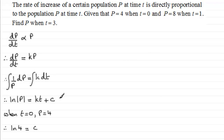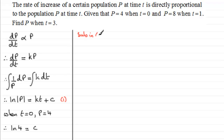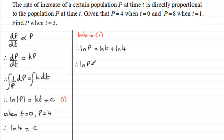Calling our integrated equation 'equation 1', we substitute C equals natural log of 4 back in. So we have: natural log of p equals kt plus natural log of 4. Rearranging — subtracting natural log of 4 from both sides — and using the subtraction rule for logs, we get natural log of p over 4 equals kt.